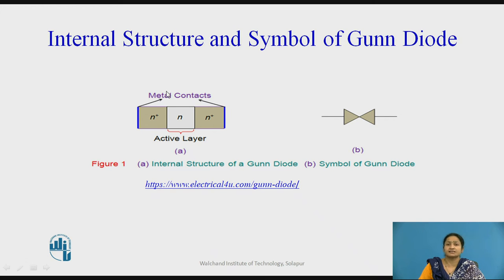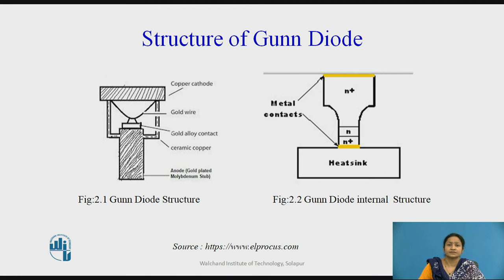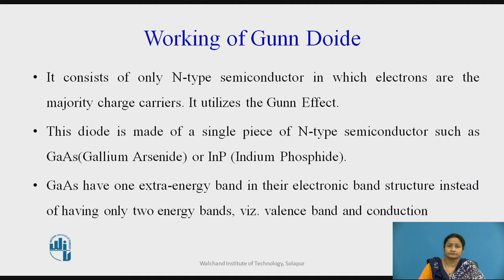Let us see the internal structure and symbol of the Gunn Diode. This is the symbol of the Gunn Diode, which has two electrodes: anode and cathode. If you see the internal structure, it is fabricated by three layers, in which the middle layer is lightly doped compared with the other two layers. The middle layer is called the active layer. This entire structure is fabricated on a conducting material which acts as a heat sink and also contributes as the cathode electrode. There is a gold wire or gold alloy conducting material fabricated on the top surface, which contributes as the anode of the device.